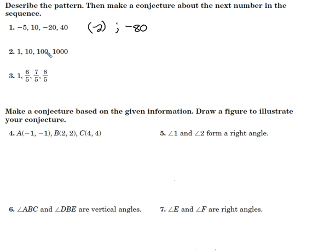For number 2, we go 1 to 10 to 100 to 1,000. It appears that we are multiplying by 10 each time. Next up, 1,000 times 10 would be 10,000. That's the next number in the sequence.